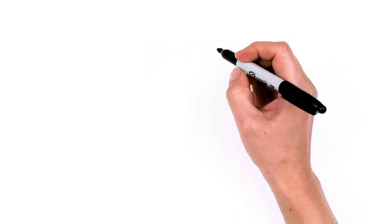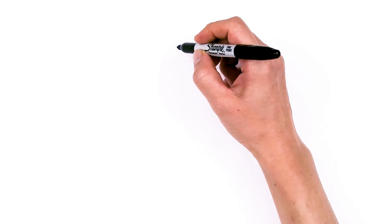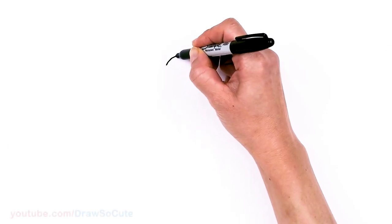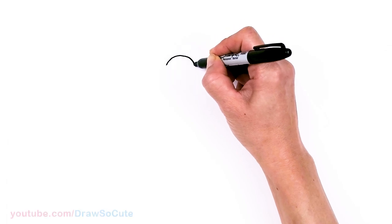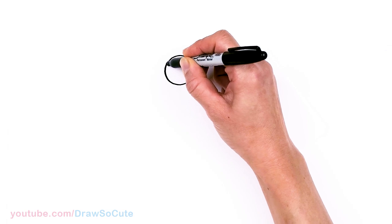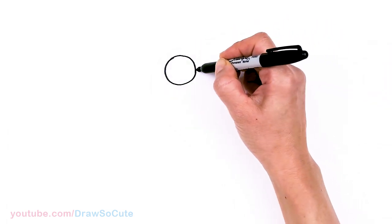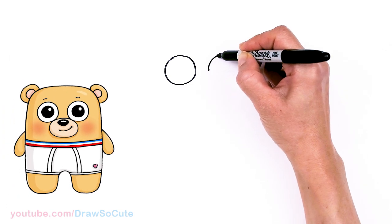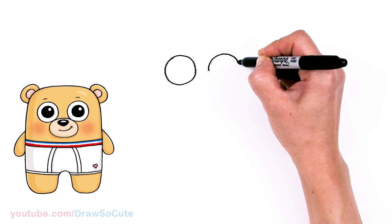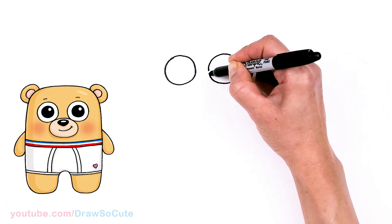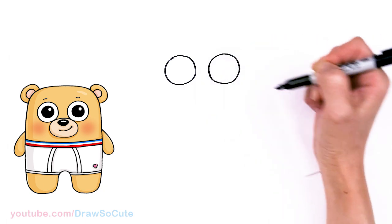To draw this very silly bear, let's first start by drawing his eyes. So we're going to come right here and draw a really big circle. And I'm going to come right across and do the same thing on the other side. Nice big circle.